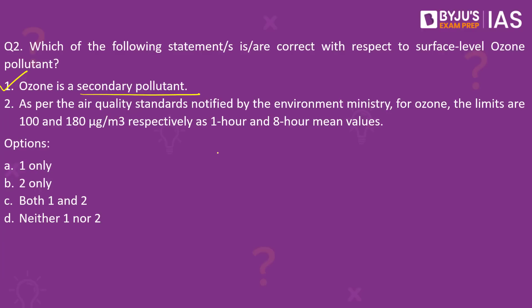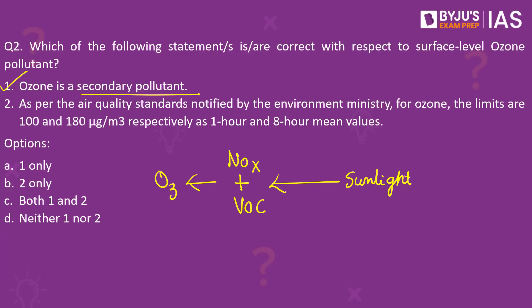Ozone is formed by the chemical reaction between nitrogen oxides and volatile organic compounds, which react in the presence of sunlight to form ozone. NOx are emitted by industrial facilities, power plants, and vehicular exhaust, whereas the major source for volatile organic compounds is unburnt fuels. In the recently held UPSC 2022 civil services prelims exam, there was a question based on the formation of ozone, wherein one statement said ozone is formed under inclement weather conditions — meaning wet or rainy. This is wrong because the formation of ozone needs the presence of sunlight.